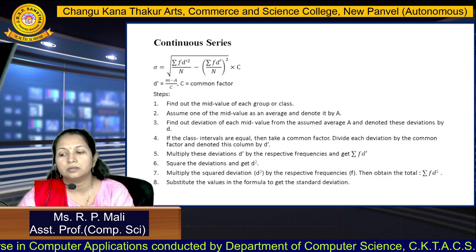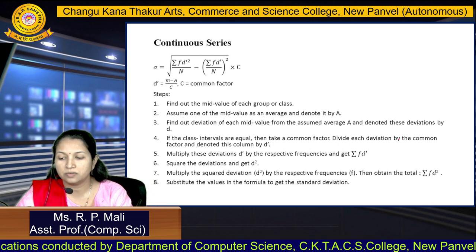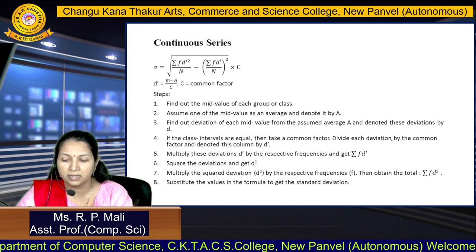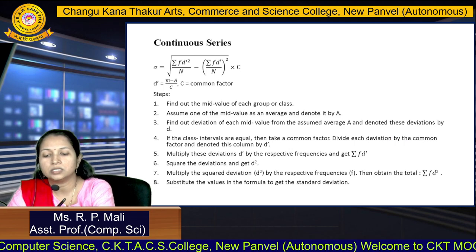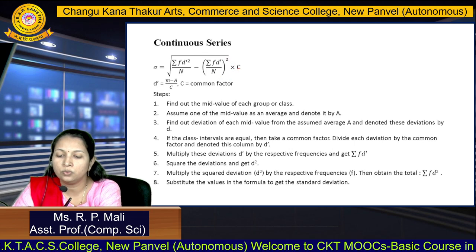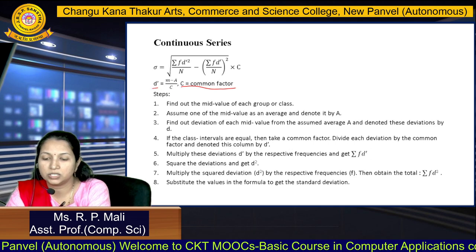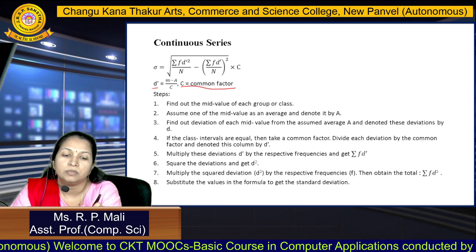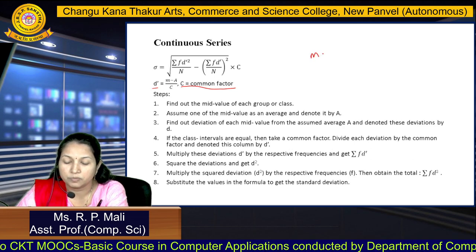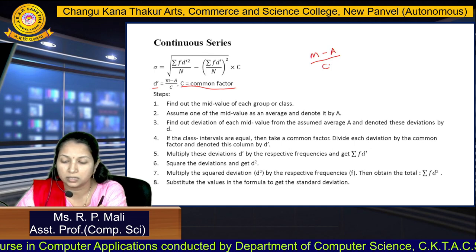Now we find the standard deviation for continuous series. The formula is σ = √(Σfd'²/N − (Σfd'/N)²) × c, where c is the common factor and d' is the deviation. Here d' = (m − a)/c, where m is the midpoint and a is the assumed mean.